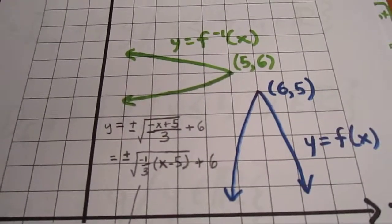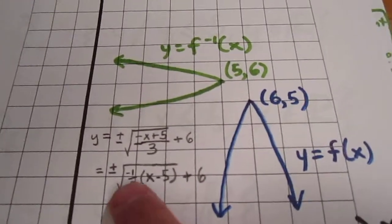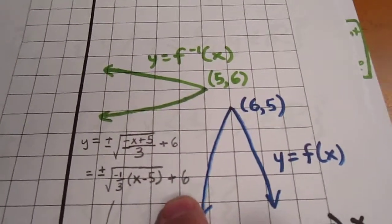Well, we also remember from our work with transformations that we wouldn't actually have to. We don't need the blue curve to be able to graph the green curve. It helps, but we don't need it.